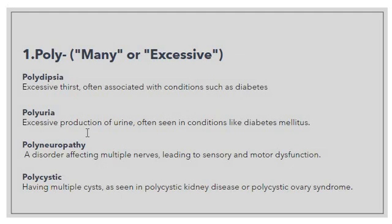Then we have 'polyneuropathy' — a disorder affecting multiple nerves. Again, you can see the sense of multiple or many, so we use the prefix 'poly', giving us polyneuropathy: a disorder affecting multiple nerves leading to sensory and motor dysfunction. If a patient suffers from this, we say many nerves are not functioning well — that's why we use 'poly', representing multiple.